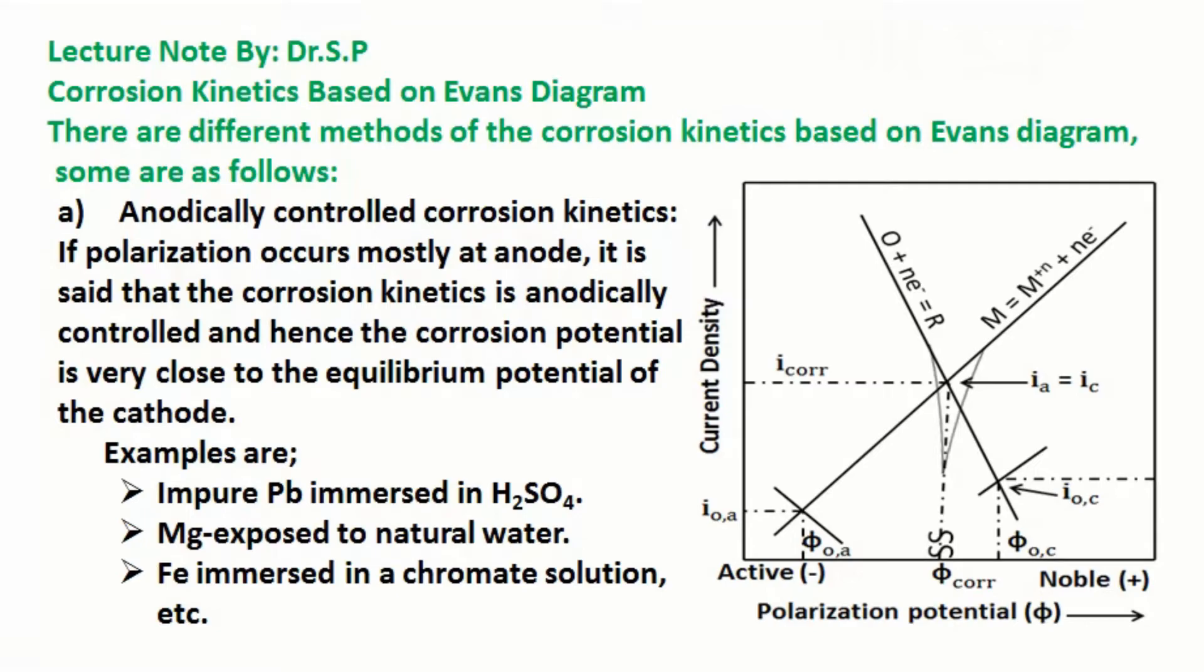Examples of anodically controlled corrosion kinetics are: impure lead immersed in sulfuric acid, magnesium exposed to natural water, and iron immersed in a chromate solution.